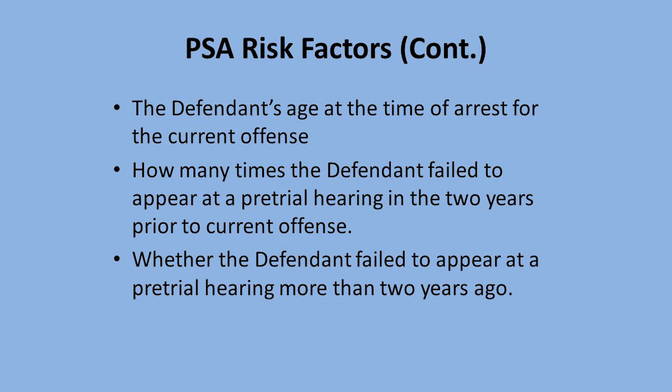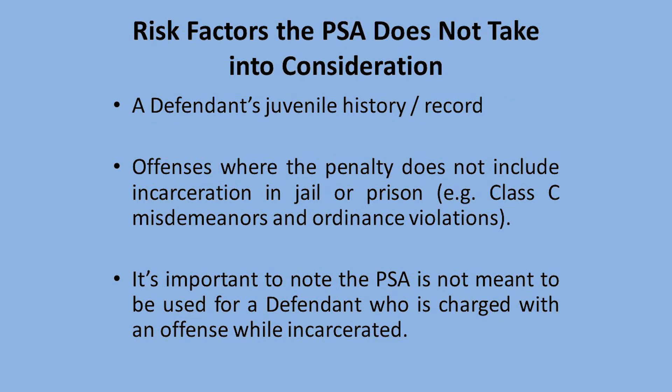Additional risk factors include the defendant's age at the time of arrest for the current offense, how many times the defendant has failed to appear at a pretrial hearing in the two years prior to the current offense, and whether the defendant has failed to appear at a pretrial hearing more than two years ago. The PSA does not take into consideration a defendant's juvenile history, any offense where incarceration is not a possible penalty — such as Class C misdemeanors in Texas like traffic tickets or public intoxication — charges while already incarcerated, or any sentencing phase of a criminal case. It's only supposed to be used during the pretrial phase.